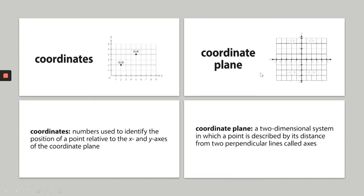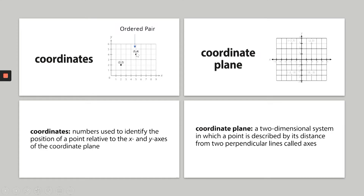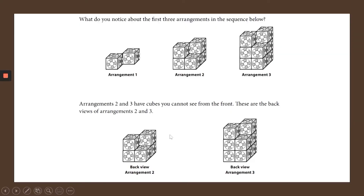If you take a look up here, you have the x-axis and the y-axis. These are coordinates that are plotted on the coordinate plane. We call that an ordered pair. When you have x, y in parentheses — x-coordinate and y-coordinate — we call that an ordered pair. Let's keep that in mind as we go through today's lesson.